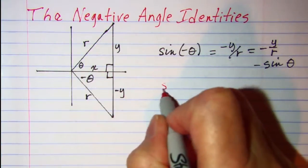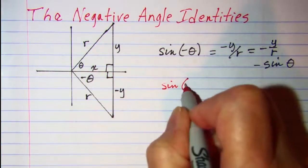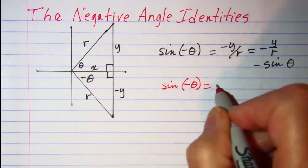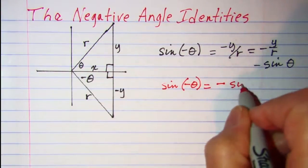So we're going to use that idea to get our other negative angle identities. Let me write this one: sine of negative theta is equal to negative sine theta.